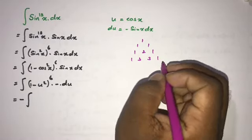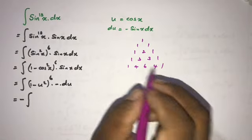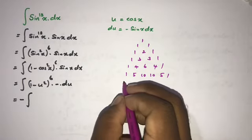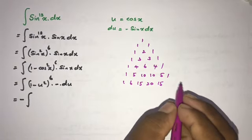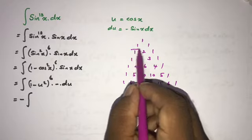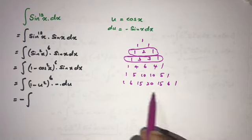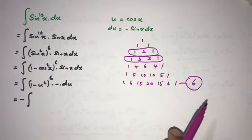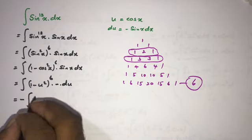From Pascal's triangle, the row for the sixth power gives coefficients: 1, 6, 15, 20, 15, 6, 1. This row gives us the coefficients for the sixth power expansion.